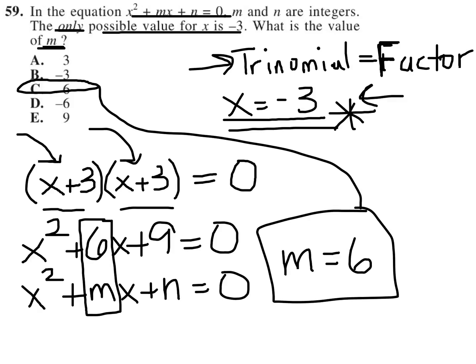Simplifying that out back to trinomial form, we get x squared plus 6x plus 9, which then we're matching. So m equals 6. n would have to equal 9 if we were asked to figure that out. Since we're not, all we care about is m, and m is 6.